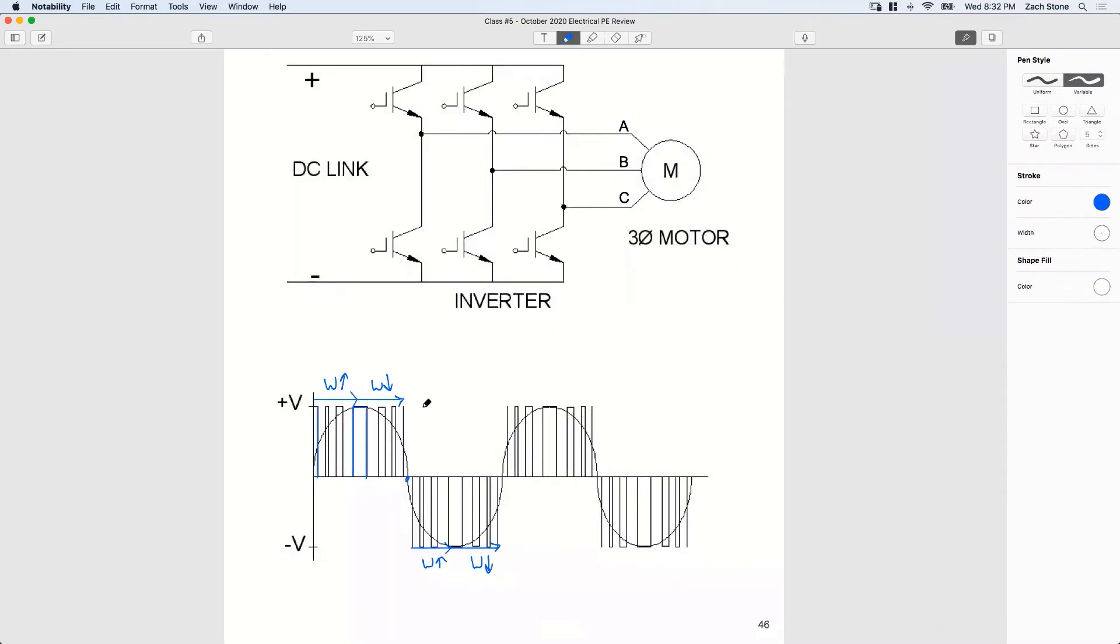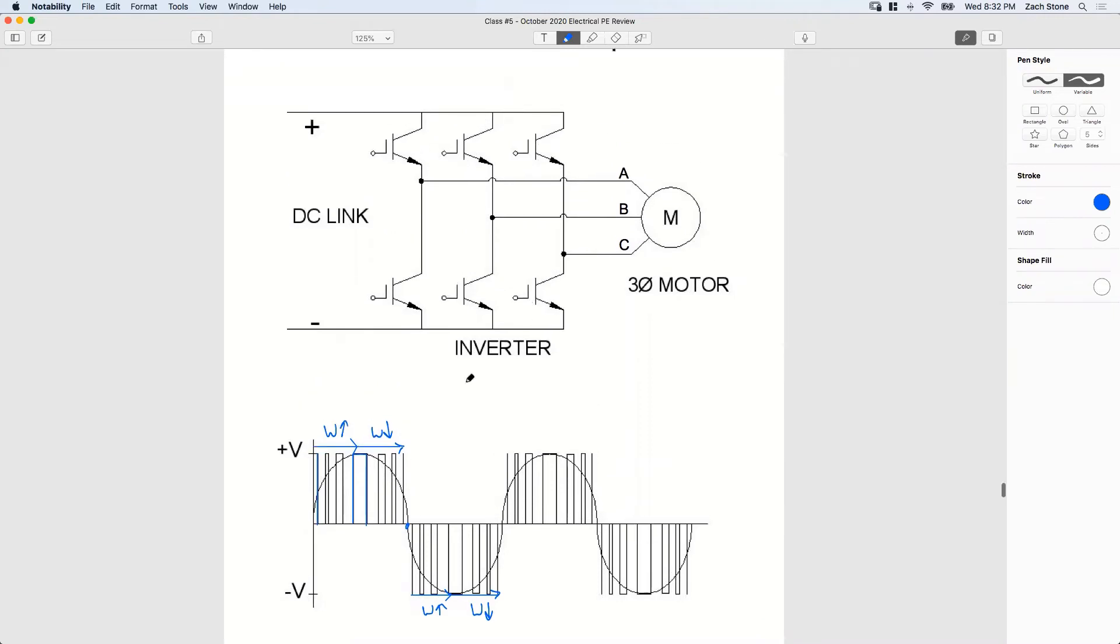Remember when we calculated the average value? When we use IGBTs to control the speed of a motor, we're really not giving it a true AC sine wave. So the sine wave in the background, that's just to kind of give you a visual guide, right? The motor is getting this chopped, pulsed width voltage.